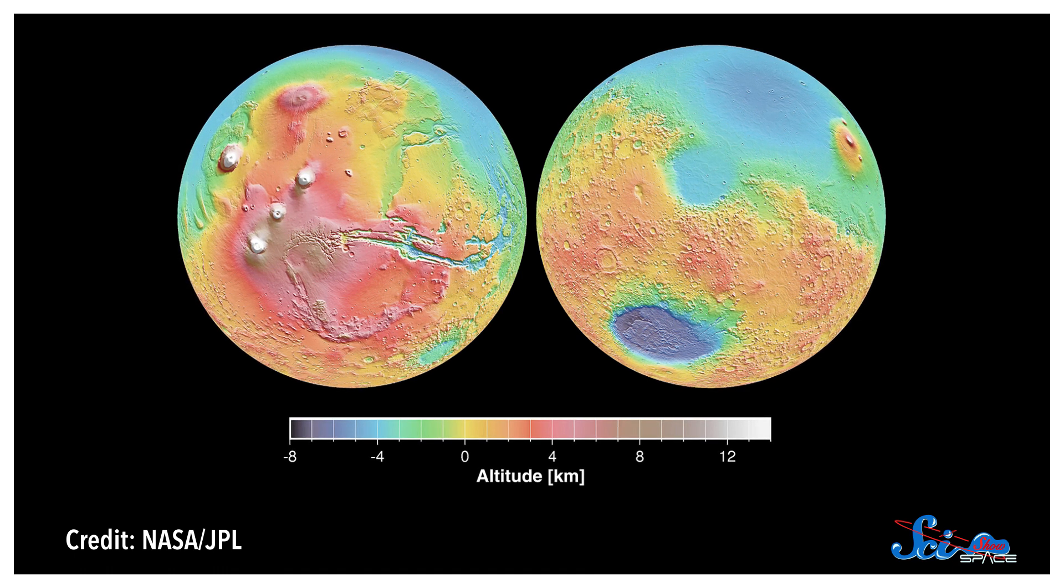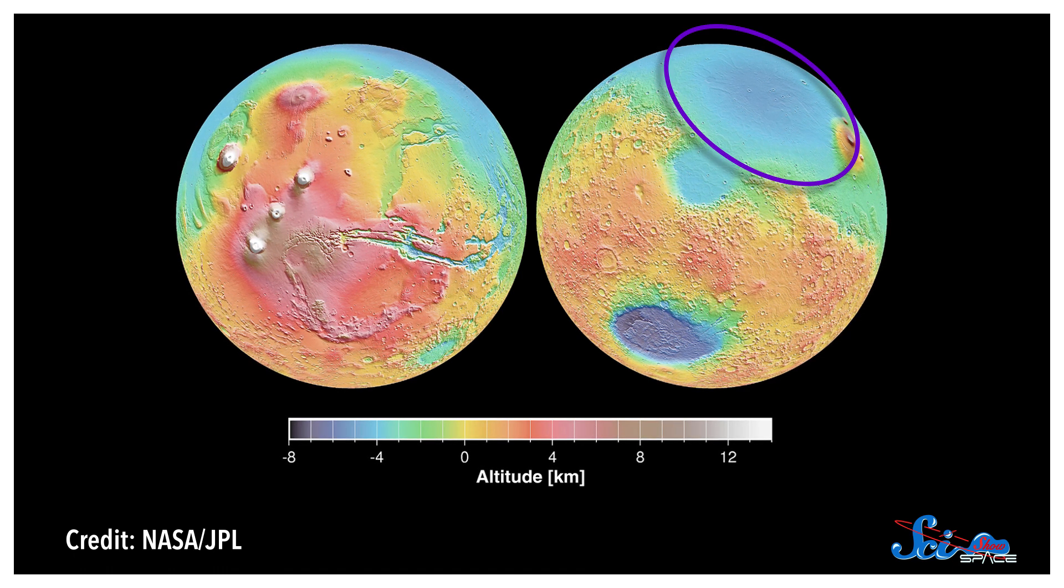Like, an impact usually leaves behind a circular impression, and the northern plains are elliptical. And anyways, scientists used to think that a collision big enough to make that kind of crater would have also made a magma ocean, which would have obliterated the crater itself. But in 2008, a team of scientists ran the numbers, and they found that there was a kind of collision that could produce this characteristic terrain.